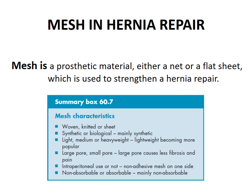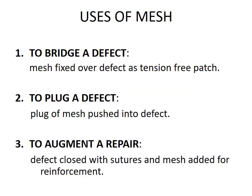This table from the textbook shows the characteristics of mesh: it can be woven, knitted, or sheet form; synthetic or biological (mainly synthetic); light, medium, or heavyweight (lightweight becoming more popular); large pore or small pore — large pore causes less fibrosis and pain; intraperitoneal use requires a non-adhesive mesh on one side; non-absorbable or absorbable (mainly non-absorbable). Uses of mesh: (1) to bridge a defect — mesh fixed over defect as a tension-free patch; (2) to plug a defect — plug of mesh pushed into defect; (3) to augment a repair — defect closed with sutures and mesh added for reinforcement. Well-placed mesh requires an overlap of 2 to 5 cm around all margins of the defect.